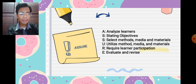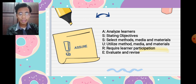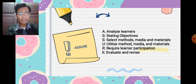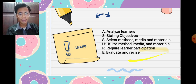The ASSURE model also has an acronym. The A is Analyze Learners. The S is State Objectives. The S is Select Methods, Media, and Materials. The U is Utilize Methods, Media, and Materials. The R is Require Learner Participation. The A is Evaluate and Revise.